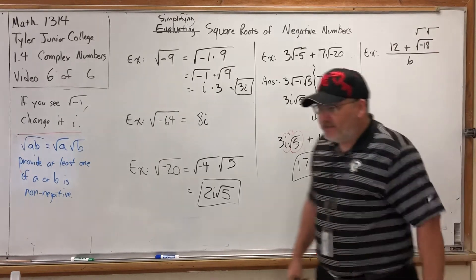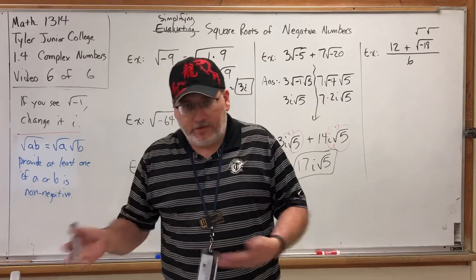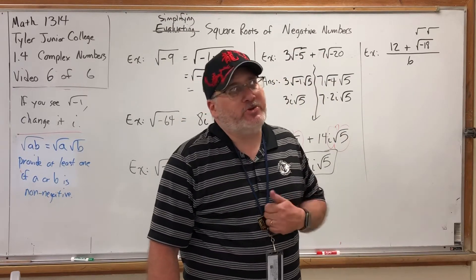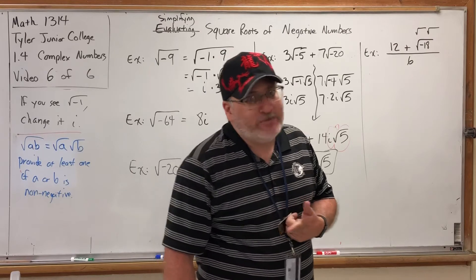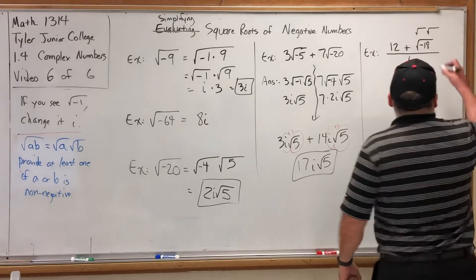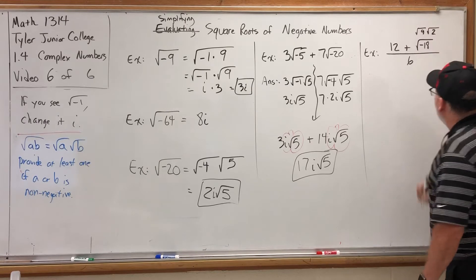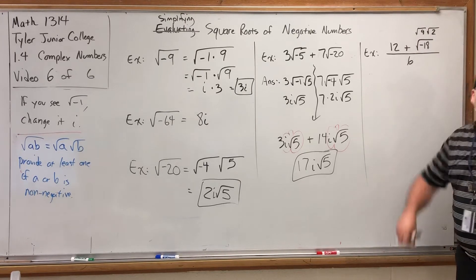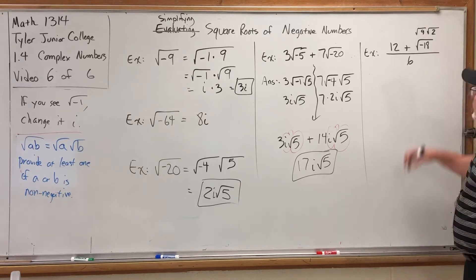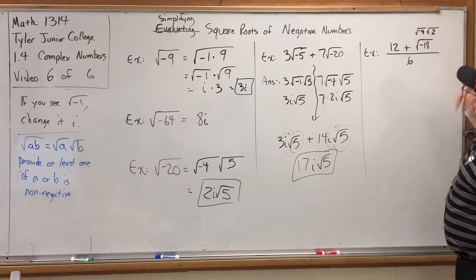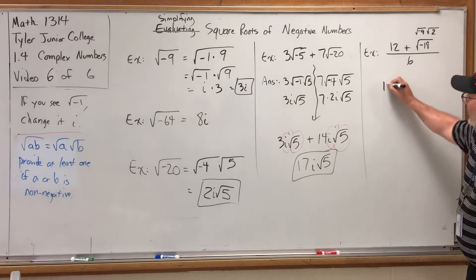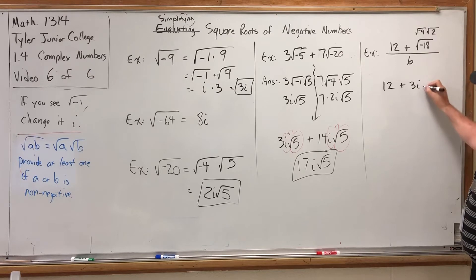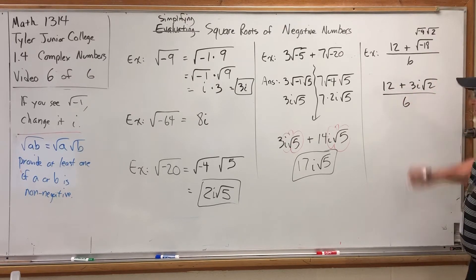How can I write 18 as a multiplication problem where I can square root one of the factors? 3 times 6? No, I don't know the square root of 3 or the square root of 6. How about 9 times 2? So we can split 18 into 9 times 2 and I know the square root of 9. But it was a negative 18, which means one of these numbers needs the negative. It goes on the one that you can square root, which is the 9. So we get 12 plus the square root of 9 is 3i. The square root of 2, we don't know, so it just sits there. This is all currently over 6.